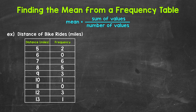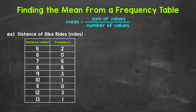Let's jump into our example where we have a frequency table displaying data about bike ride distances. Let's say that a person tracked the distances of their bike rides for a month. These are the results. In order to find the mean, we need to add all of the distances and then divide by the number of bike rides there were.